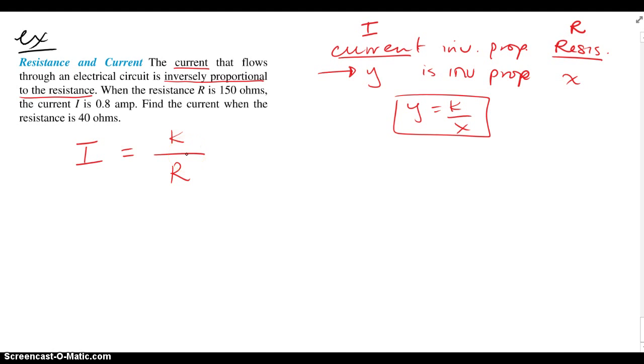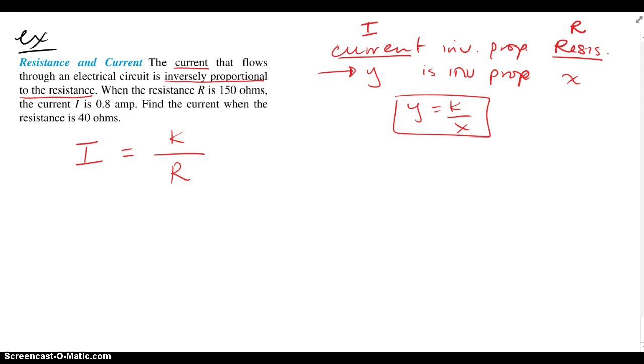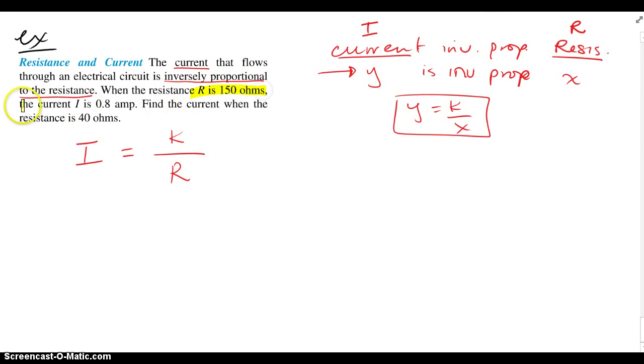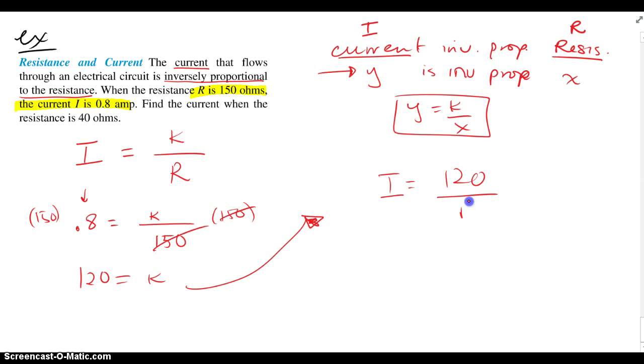Now they give us some info, some numbers to use. R is 150, I is 0.8. Let's use that information. So I is 0.8, R is 150. That'll help me find k. Again, their product always gives me k anyway if I multiply the two quantities. We have our k to be 120, which means my overall model is I equals 120 over R.